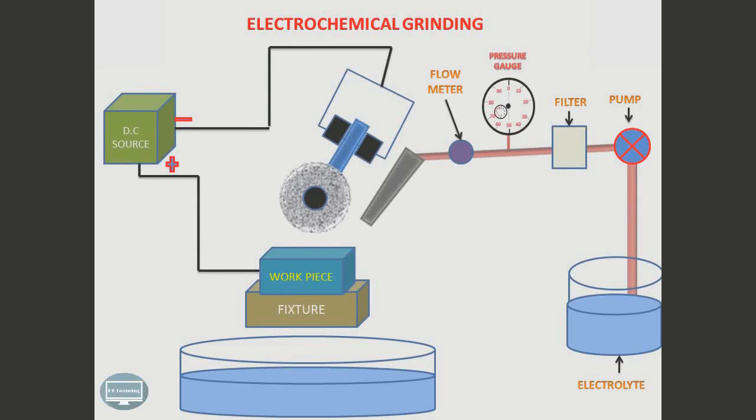Now we see the process of electrochemical grinding. The DC power source will supply the power to the tool and the workpiece. The pump will start rotating and it will suck the electrolyte from the electrolyte container.